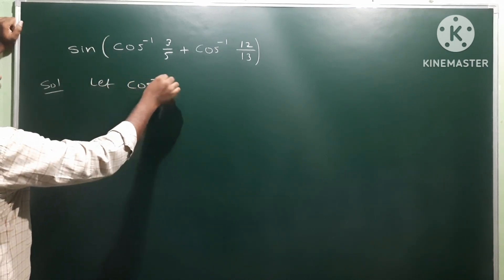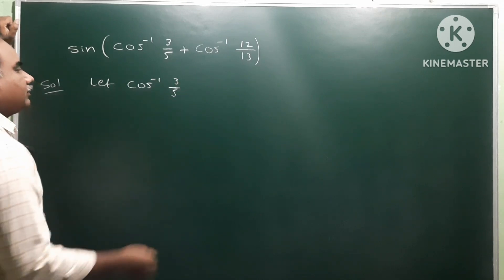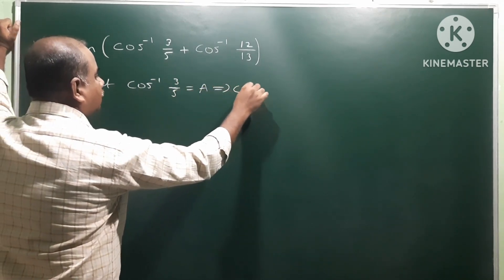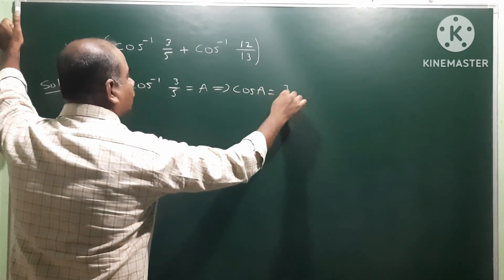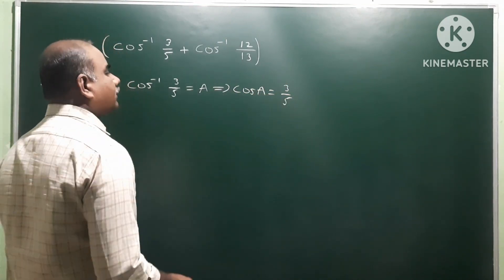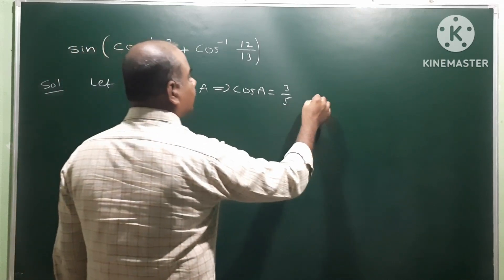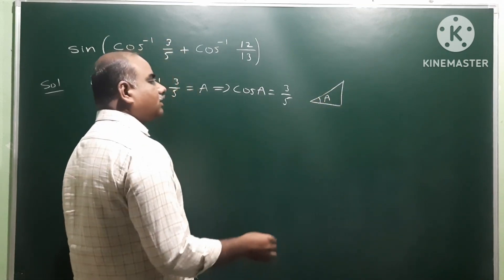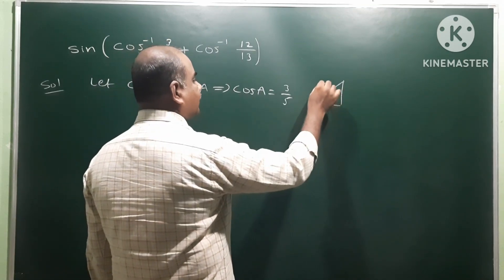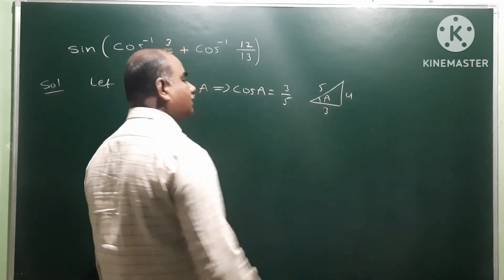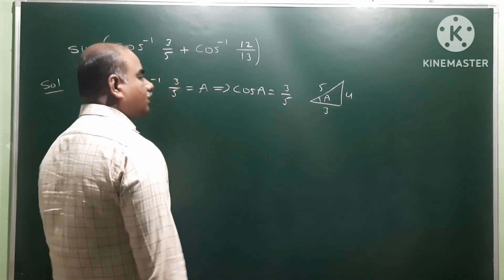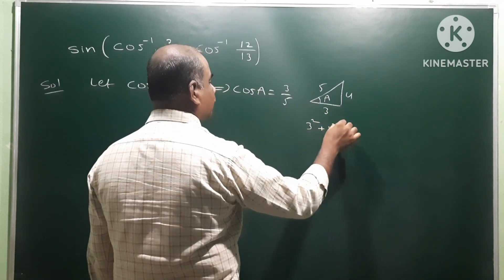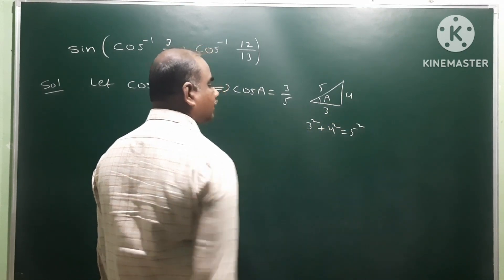Let cos inverse 3 by 5 be taken as a, that implies cos a is equal to 3 by 5. Take a right angle triangle where the angle is a. Cos means adjacent side by hypotenuse. The opposite side becomes 4 because these are the Pythagorean triples: 3 squared plus 4 squared is equal to 5 squared.